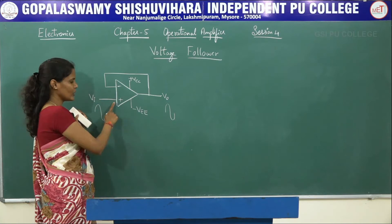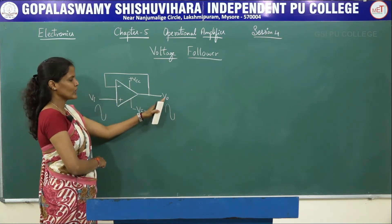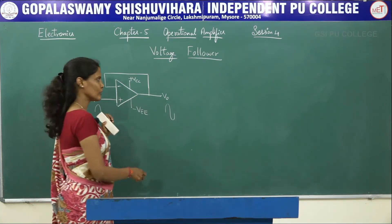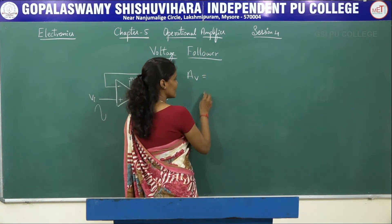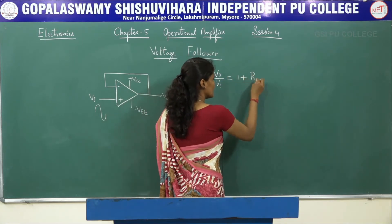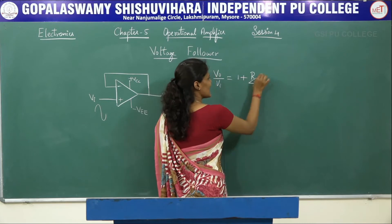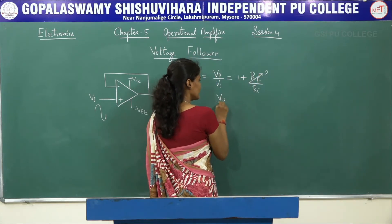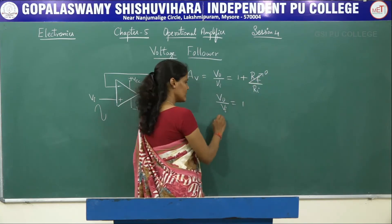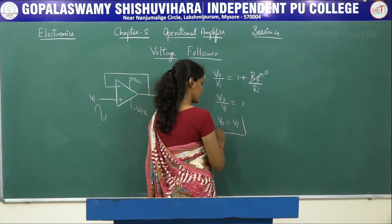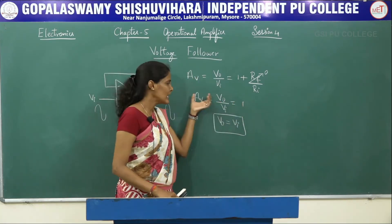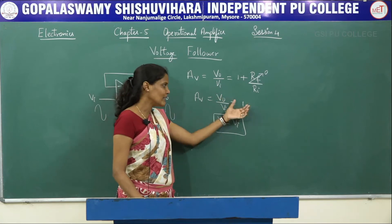The input signal is given to the non-inverting input terminal of the op-amp. The output voltage will be denoted by V0. Since the input signal is connected to the non-inverting terminal, the voltage gain formula Av = V0/Vi = 1 + Rf/Ri applies. Since Rf equals 0, we are left with V0/Vi = 1 + 0 = 1. Therefore, V0 equals Vi itself. The gain of this voltage follower is equal to 1.